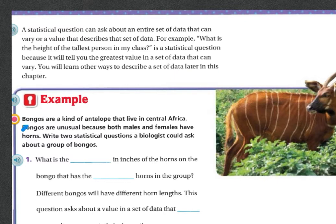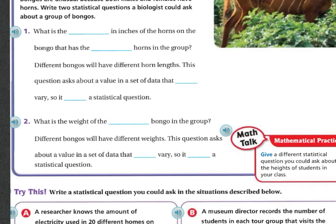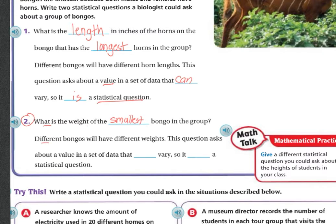Our example today is about bongos. Bongos are unusual because both males and females have horns. Write two statistical questions a biologist could ask about a group of bongos. One could be: 'What is the length of the horns on the bongo that has the longest horns in the group?' Different bongos will have different horn lengths — this question asks about a value in a set of data that can vary, so it is a statistical question. Number two: 'What is the weight of the smallest bongo in the group?' Different bongos will have different weights, so this is also a statistical question.